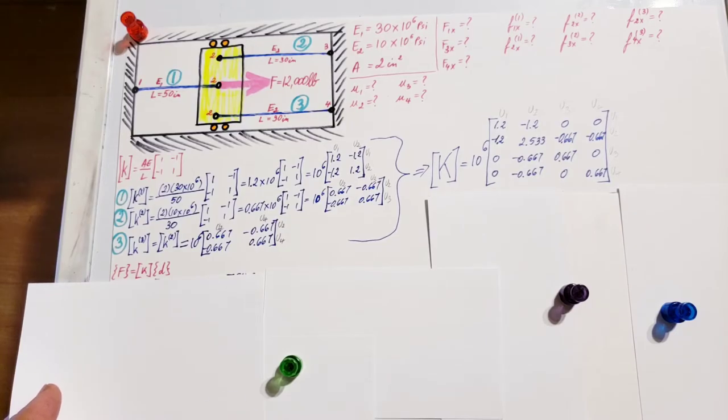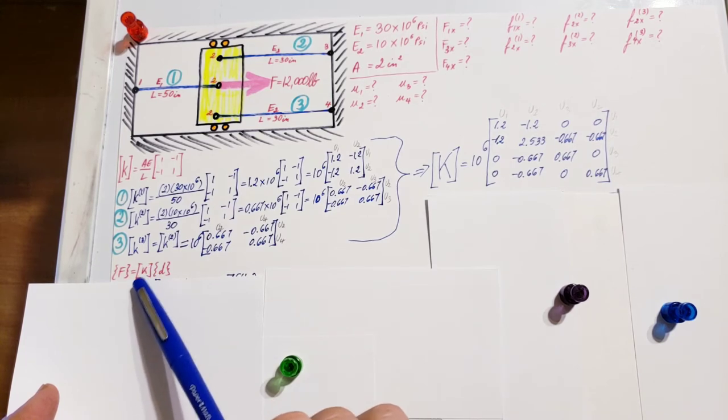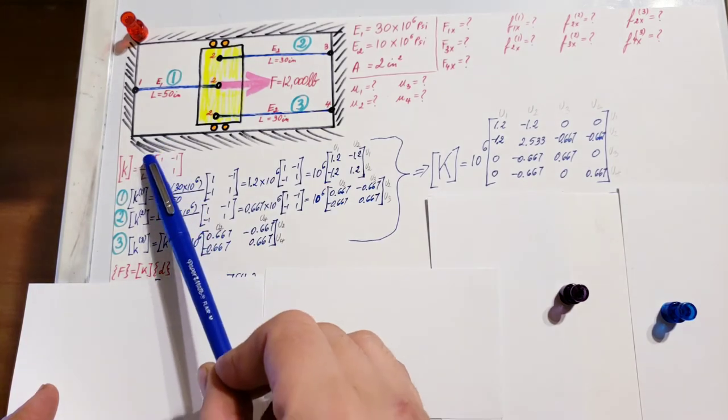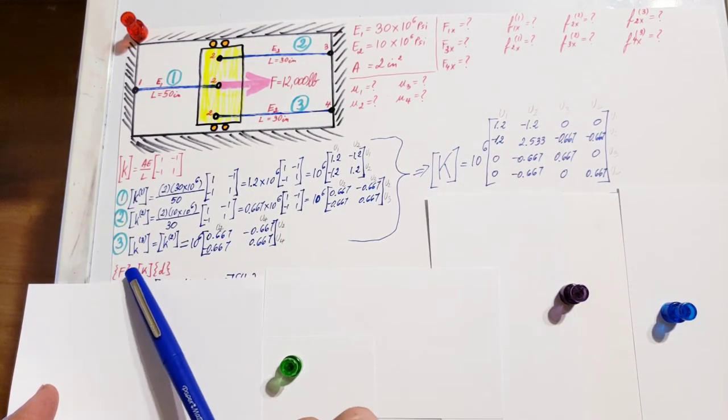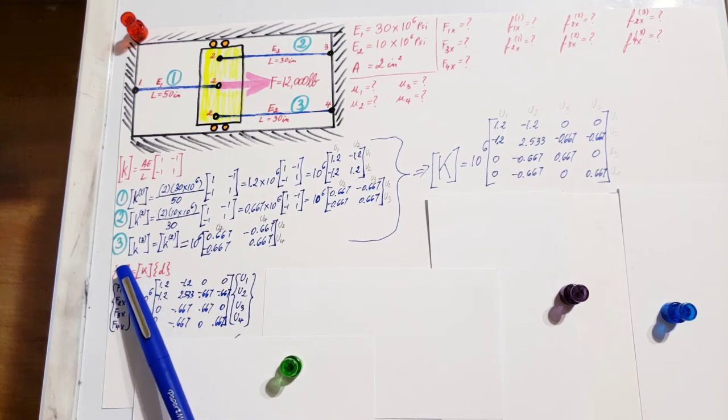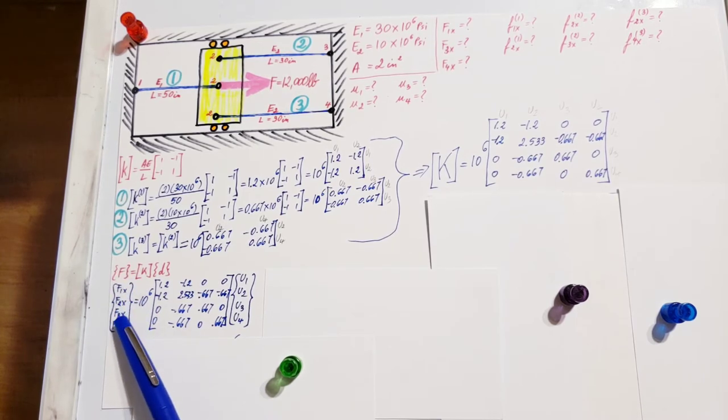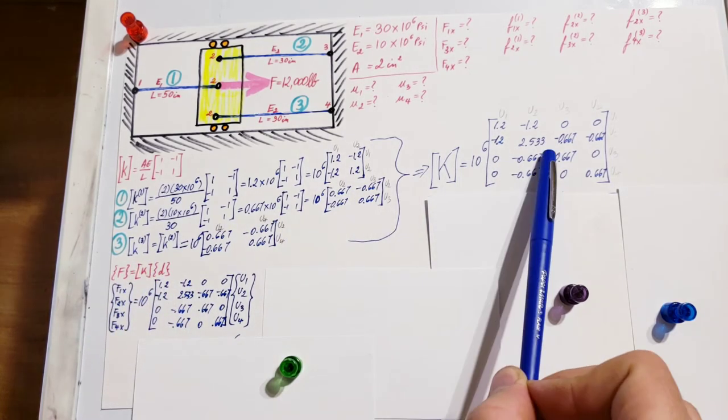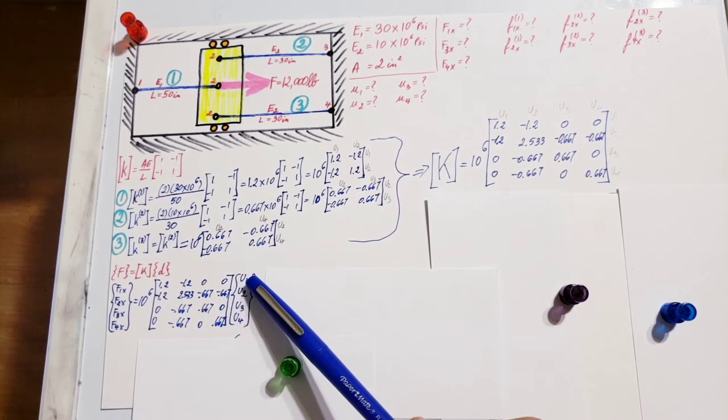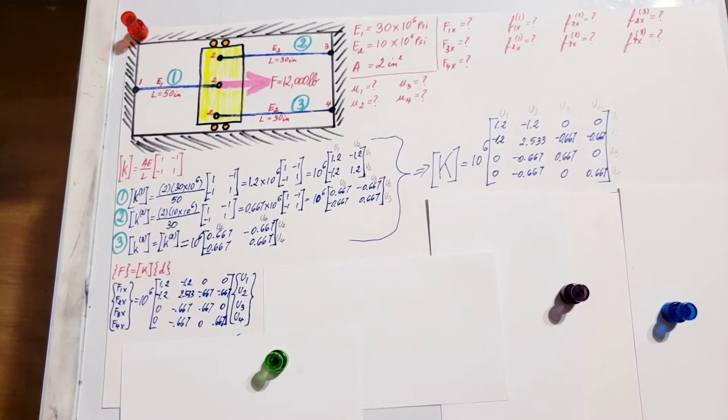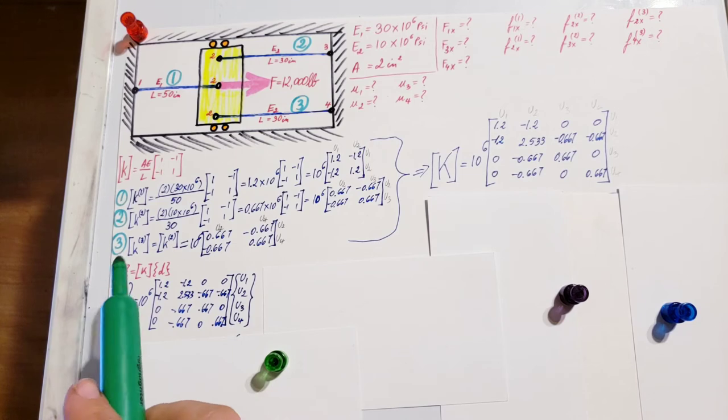Now we can continue with F = KX, the force on a spring formula. Our K is not just a simple spring K since we're working with bars, so it's AE over L with this matrix, and it turns into our global stiffness matrix. Let's expand these in matrix form: global forces f1, f2, f3, f4 in the x direction equals the global stiffness matrix times displacements at nodes 1, 2, 3, and 4.